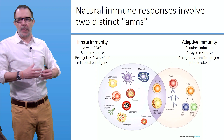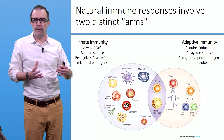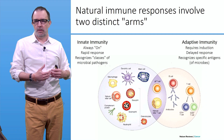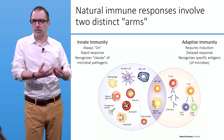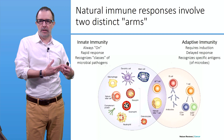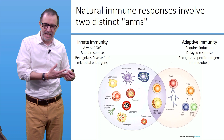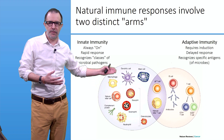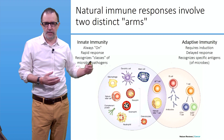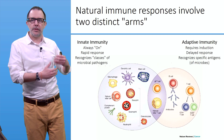Our immune response involves two distinct arms: innate immunity and adaptive immunity. Innate immunity is the first-line response to aggression, infection, and injuries — it's always on. It's a very rapid response that can recognize classes of microbial pathogens. Different cells are involved in innate immunity, such as non-priming cells, macrophages, and natural killer cells.